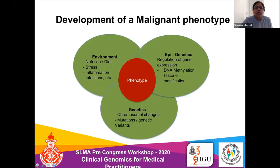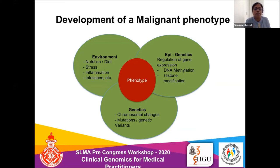The development of a malignant phenotype is controlled by three things: your genetic composition — chromosomal changes, mutations, and genetic variants; epigenetic changes — DNA methylation and histone modification regulating gene expression; and the environment — diet, nutrition, and stressors. It is not just one factor but many factors coming together that bring about the malignant phenotype.